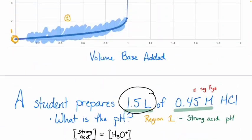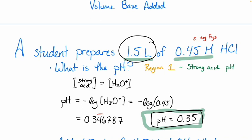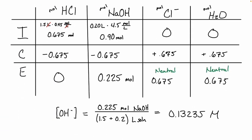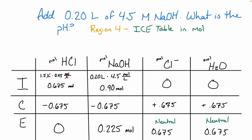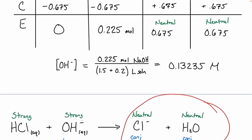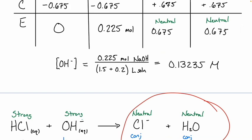To be clear, this problem is asking for the pH after a total of 0.2 liters of base has been added from the beginning — just past our equivalence point. Now that we have a concentration of hydroxide, we can calculate pOH and then pH. Our pH will be quite high because we have excess strong base. We'll pick this up next time, making it more complicated by talking about weak acids.